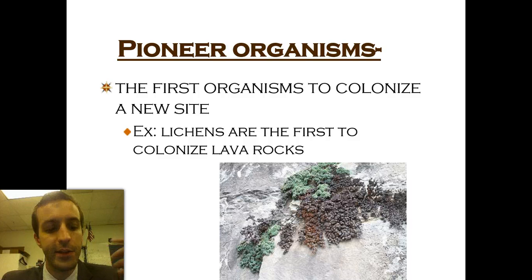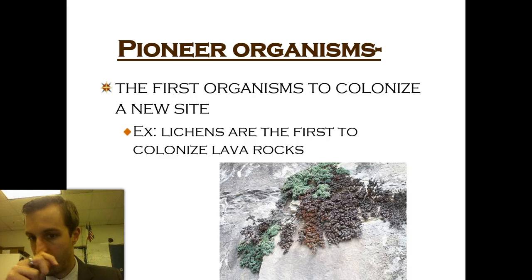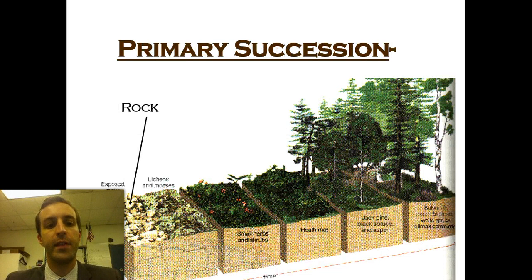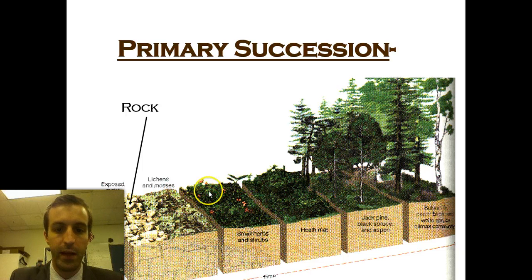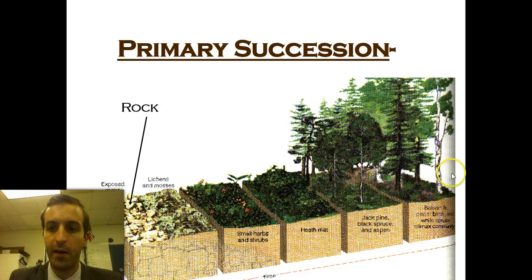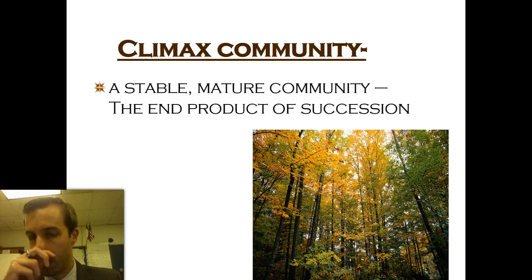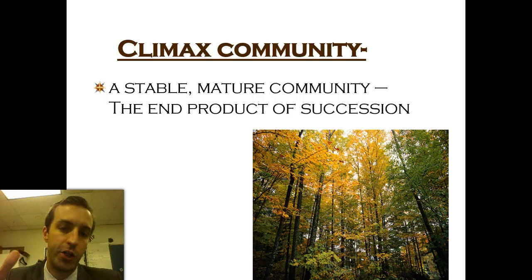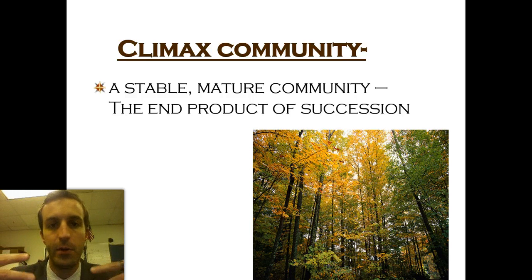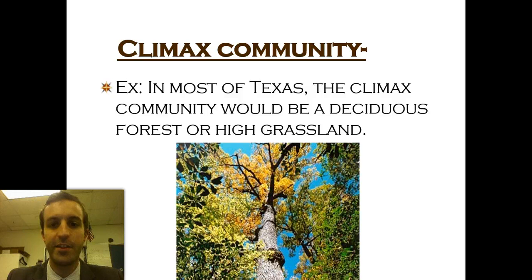You need to start an ecosystem somehow, and the first things that crop up are your lichens, like you see behind me here — these little mossy kinds of things. Those are your very first things that colonize rocks. From there, you start with lichens and moss, move up to small herbs and shrubs, then bigger grasses and bigger shrubs, then more complex trees, on and on and up and up. That's primary succession, and you're building to what's called a climax community — a stable, mature community that is sustainable. In Texas, you'd be looking at either deciduous forest or high grassland, depending on what part of Texas you're in.